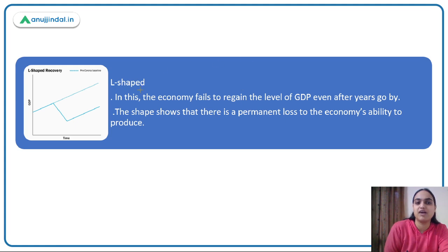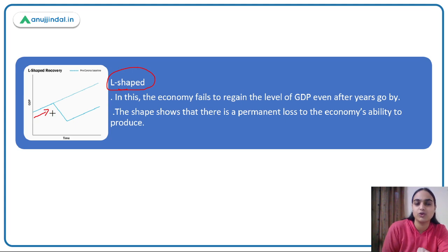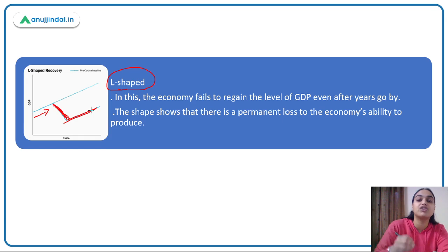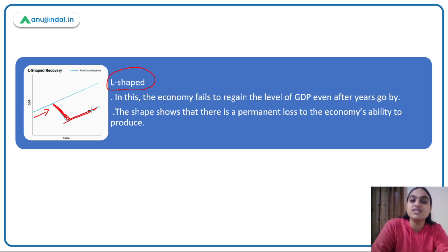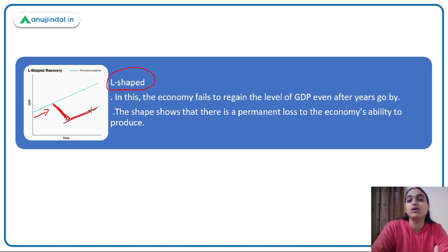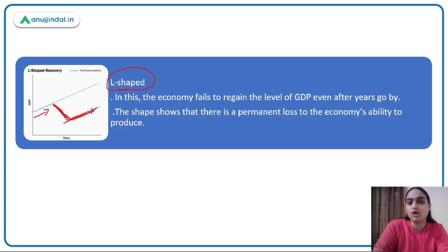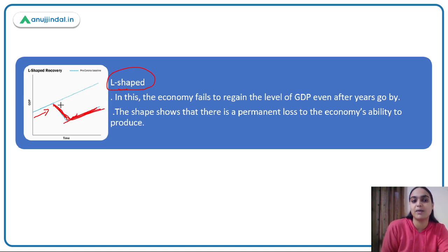Before coming to K-shaped recovery, one more type remains — the L-shaped recovery. Here, the economy is on a normal growth trend, some disruption happens causing a downfall, but that continues for long and it becomes really very difficult to recover. Whatever disruption caused such a major impact that years and years go by without recovery. It becomes very difficult to regain the level of GDP that was there before the disruption, showing permanent loss of the economy's ability to produce and generate incomes.